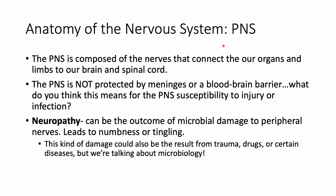The peripheral nervous system consists of all the nerves connecting your organs and limbs to your brain and spinal cord. However, the peripheral nervous system is not protected by meninges or by a blood-brain barrier. This means it is much more susceptible to infection than the central nervous system, as it simply does not have as many layers of protection.